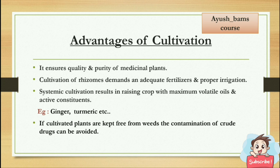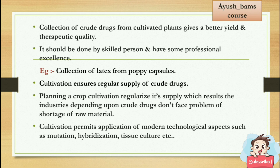Advantages of cultivation: it ensures quality and purity of medicinal plants. Cultivation of rhizomes demands adequate fertilizers and proper irrigation. Systematic cultivation results in raising crops with maximum volatile oils and active constituents — for example, ginger and turmeric. Cultivated plants are kept free from weeds, so contamination of crude drugs can be avoided. Collection of crude drugs from cultivated plants gives better yield and therapeutic quality.